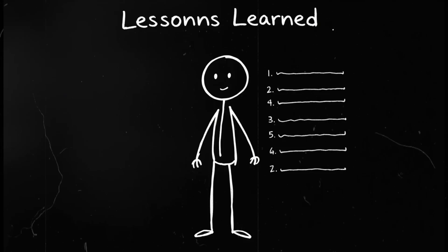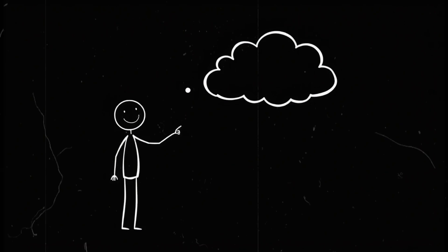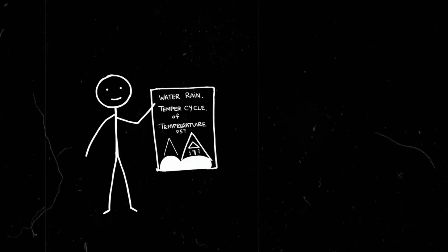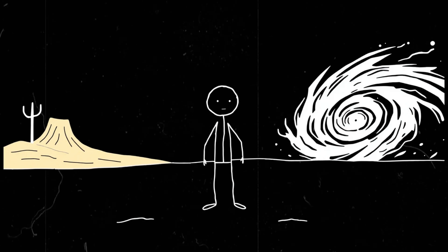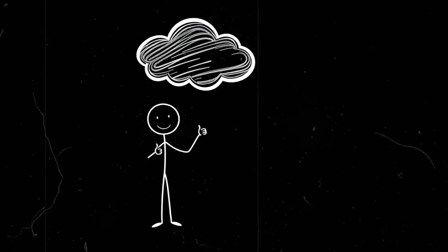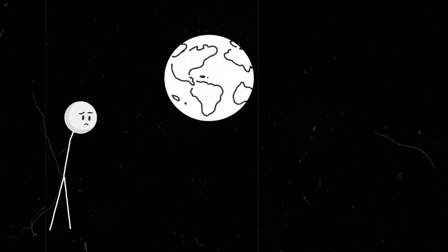So what have we learned today? Clouds might seem like fluffy, innocent background scenery, but they're absolutely vital to life on Earth. They control our weather, protect us from extreme temperatures, and keep the water cycle running. Without them, Earth turns into a chaotic, scorching, freezing, drought-ridden, hurricane-fueled nightmare. So the next time you complain about an overcast day, maybe just say thank you to the clouds, because trust me, you do not want to know what happens when they're gone.